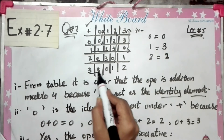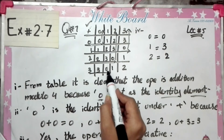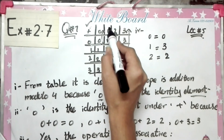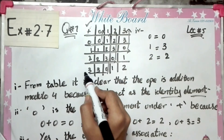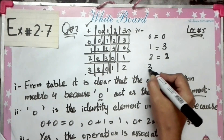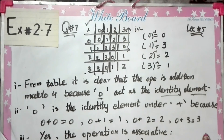Next, for 3: we start from row 3, look for 0, and see that 1 is written — so the inverse of 3 is 1. Clear? So the inverses are: inverse of 0 is 0, inverse of 1 is 3, inverse of 2 is 2, inverse of 3 is 1.